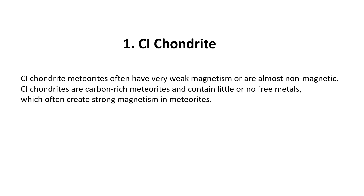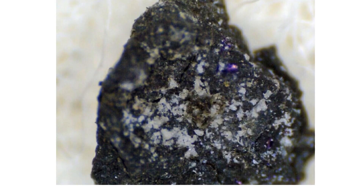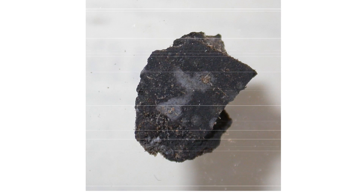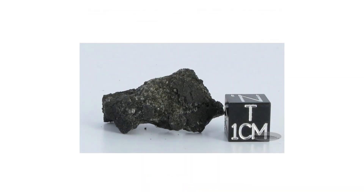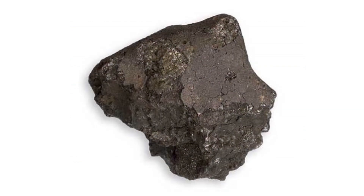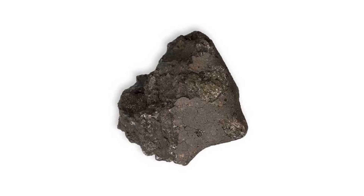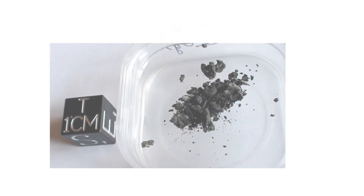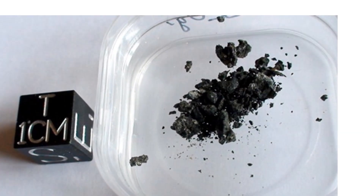Magnetism of CI chondrite meteorites: CI chondrites generally exhibit very weak or nearly non-existent magnetism. CI chondrites are rich in carbon and contain very little or no free metal, which is typically a significant contributor to strong magnetism in meteorites. Reasons for weak magnetism in CI chondrites — mineral composition: CI chondrites primarily contain minerals such as clay, carbonates, and phyllosilicates, minerals formed through water interaction, which do not have strong magnetic properties.